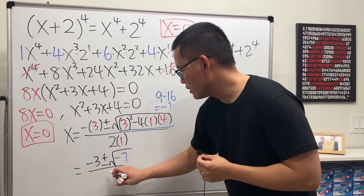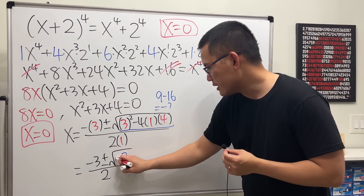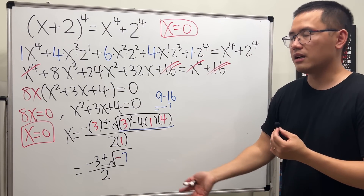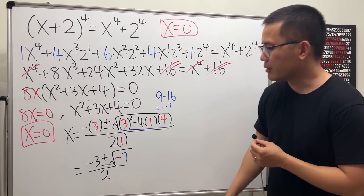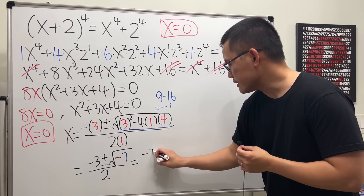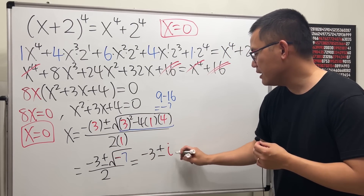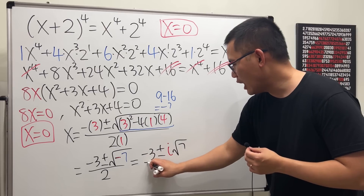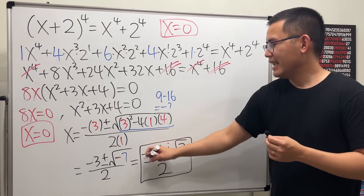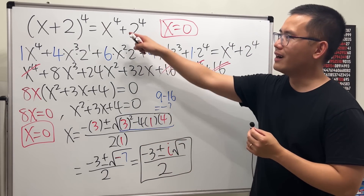So the inside is negative 7, giving us x = (−3 ± √(−7)) / 2. Because we have a negative number inside the square root, we get complex numbers. Writing it out: x = (−3 ± i√7) / 2. These two are the complex solutions to this equation.